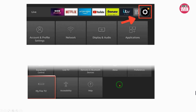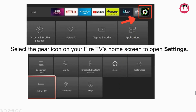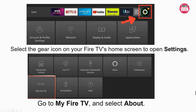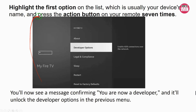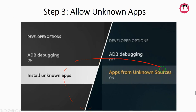Now scroll right to the Settings gear and click it. Select My Fire TV, then open Developer Options. Depending on your Fire Stick version, you will see one of two options. If you see Install Unknown Apps, click it and enable Downloader. If you see Apps from Unknown Sources, select it and click Turn On at the prompt. That's it — your Fire Stick is now ready to install third-party apps.